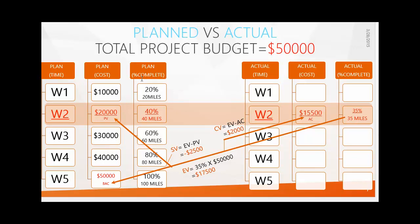Let's go into the details of what was planned. In week one, the planned cost was ten thousand dollars and she needed to complete twenty percent. In week two, twenty thousand dollars and forty miles, and so on through week five. In the actuals, by week two Miss Ann had spent fifteen thousand five hundred dollars and completed 35 miles. Now we will compare what was planned versus what happened in actuals.